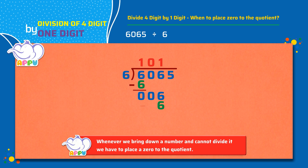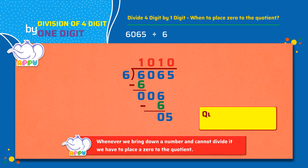Next, we bring down the number in the one's place, which is 5. So the number now is 5. We cannot divide 5, so we write 0 to the quotient. We stop division because 5 is less than 6. So 1010 is the quotient and 5 is the remainder.